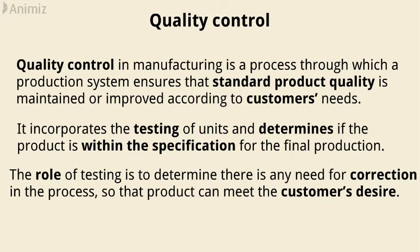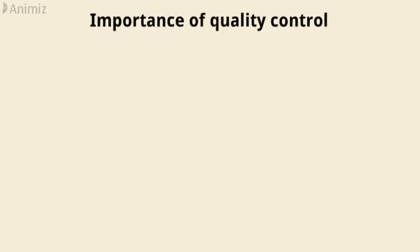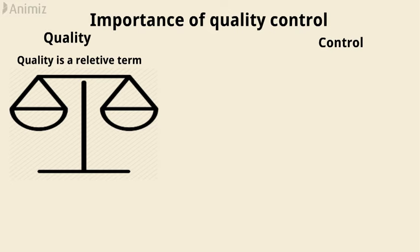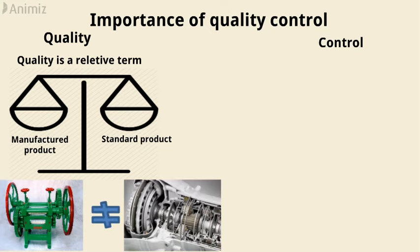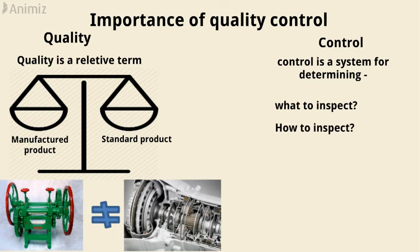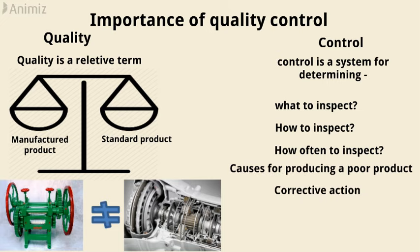The role of testing is to determine if there is any need for correction in the process so that the product can meet the customer's desire. Quality is a relative term explained by comparing it with a standard product. For example, a gear used in a sugarcane juice extracting machine is not as precisely finished as a gear used in an engine transmission system. Control is a system for determining what to inspect, how to inspect, and how often to inspect. It also finds out the causes for producing a poor product and suggests corrective action.